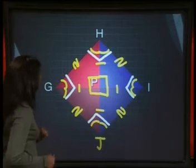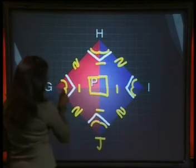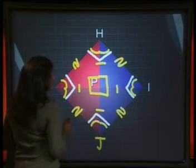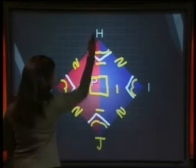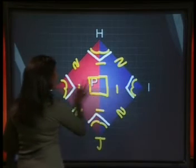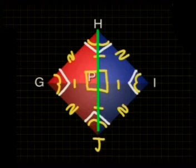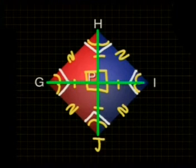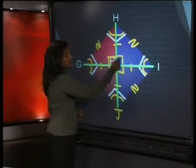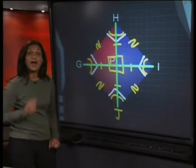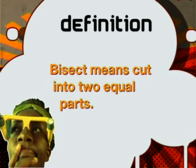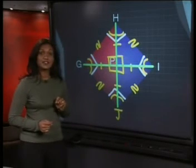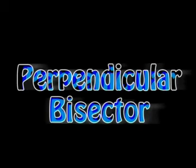Look at these line segments. HP equals PJ, and GP equals PI — they all have the same markings. HP plus PJ makes up one diagonal, and GP plus PI makes up the other diagonal, so the diagonals are equal. Because all these parts are equal to one another, the diagonals bisect one another — remember that bisect means cut into two equal parts. The angles at P are all 90 degrees, so the diagonals are perpendicular to each other. In other words, each diagonal is a perpendicular bisector of the other diagonal.